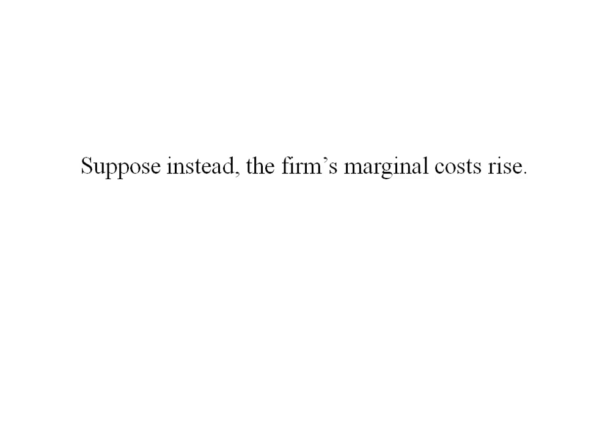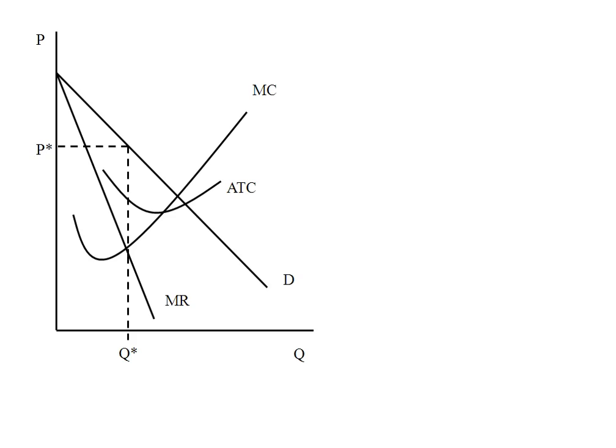Suppose instead this firm's marginal costs rise. Same graph that we're starting with, but now we're shifting marginal cost upward. It's going to cross marginal revenue at a new Q star. We're going to still go up to our same demand curve and over to find our new P star.